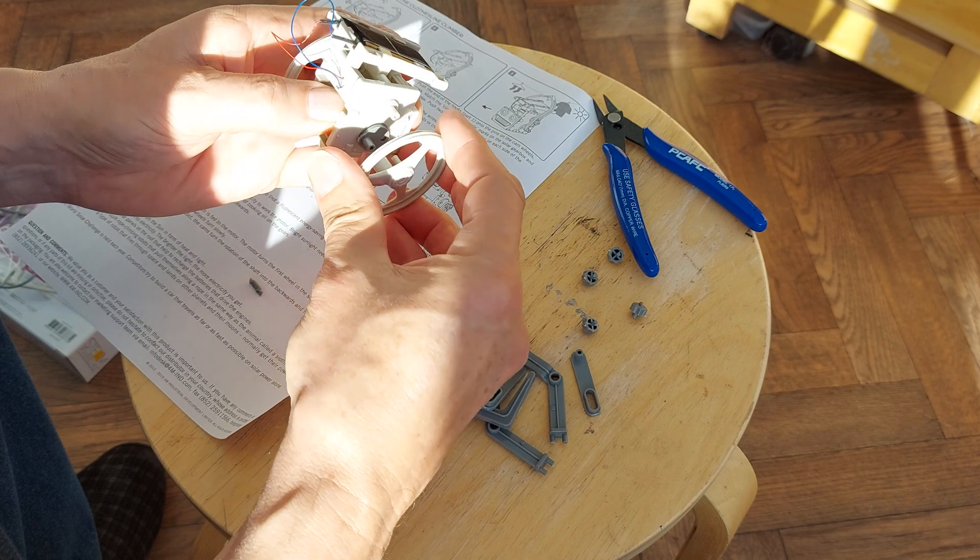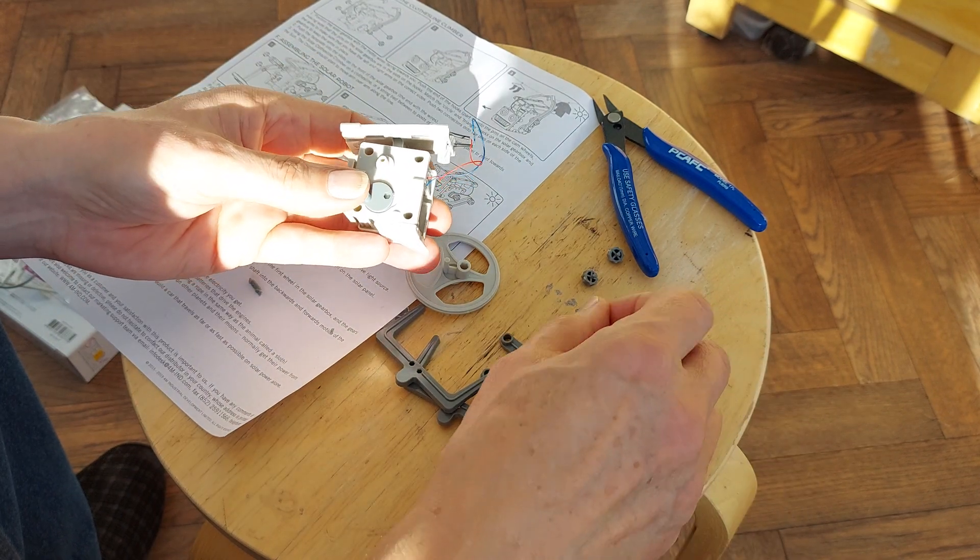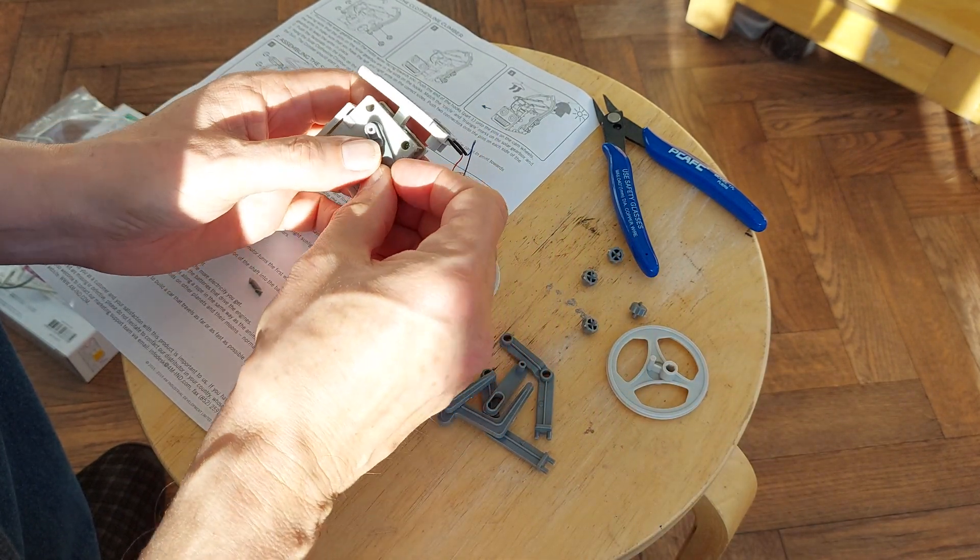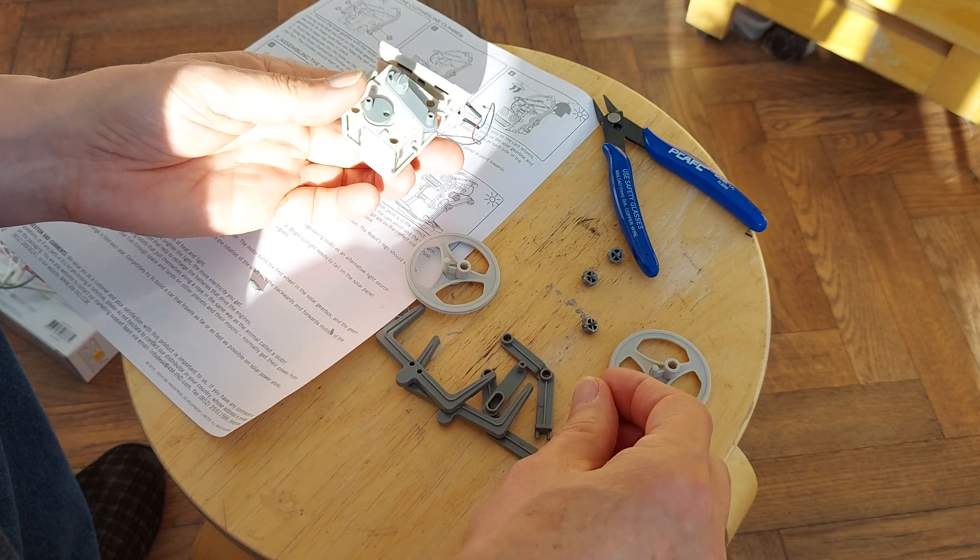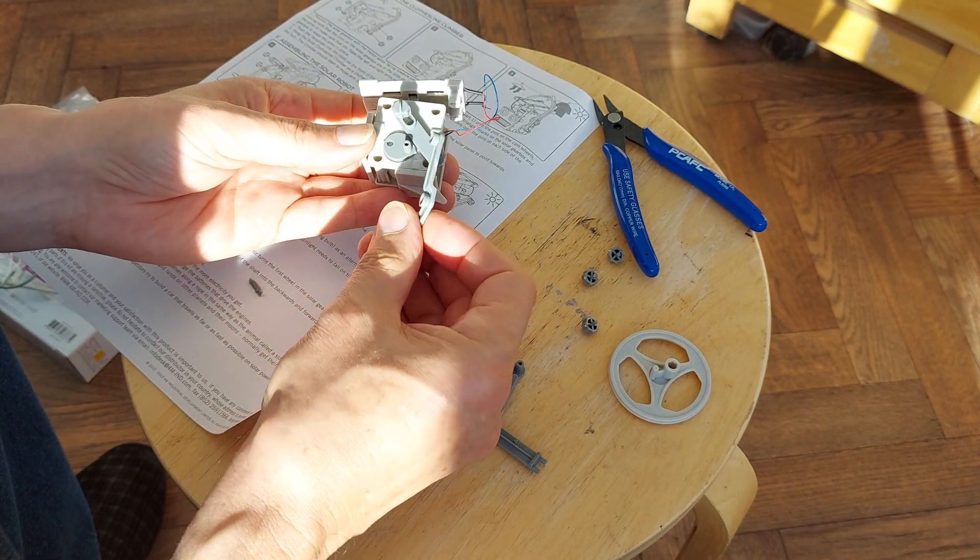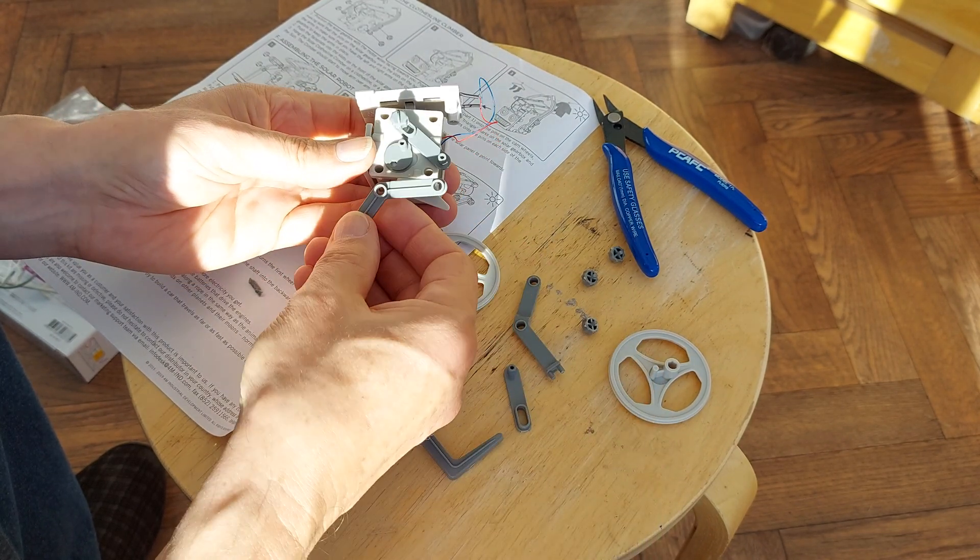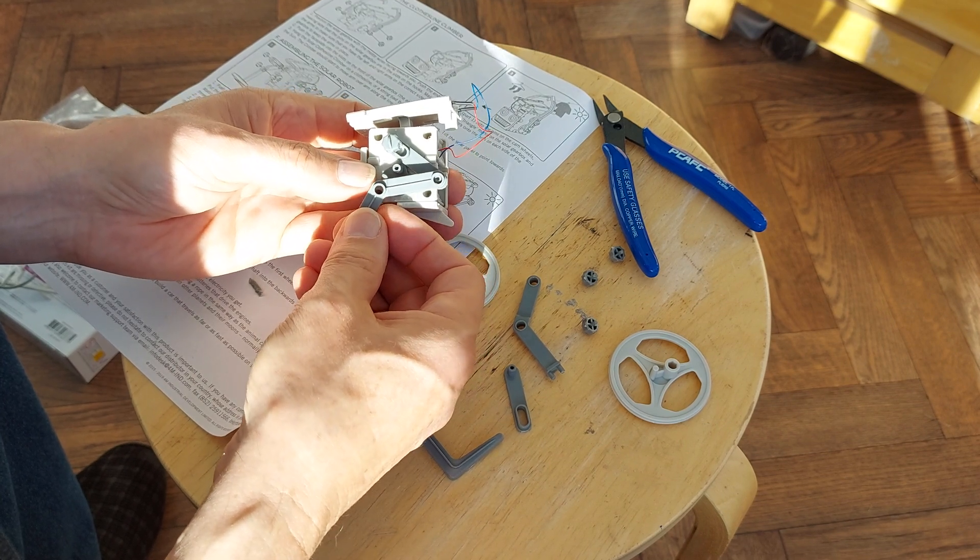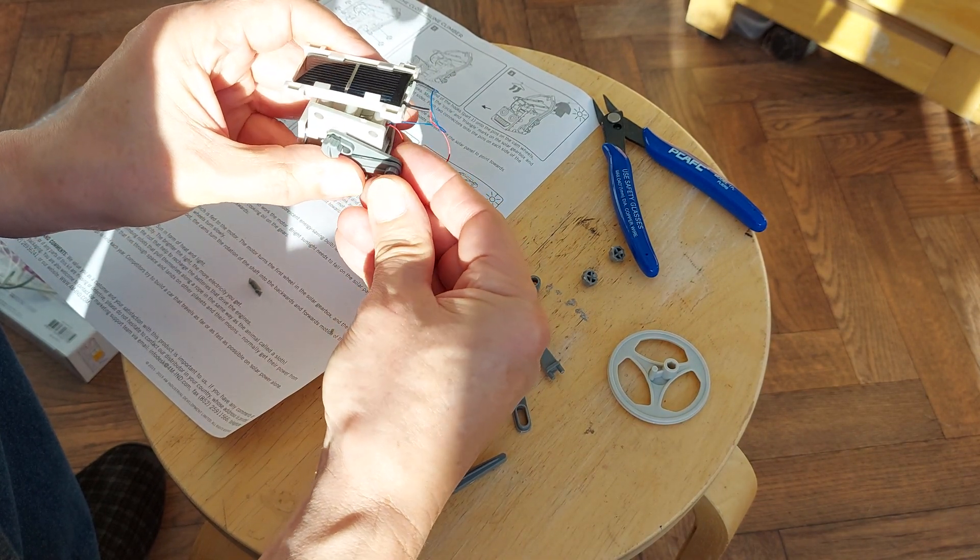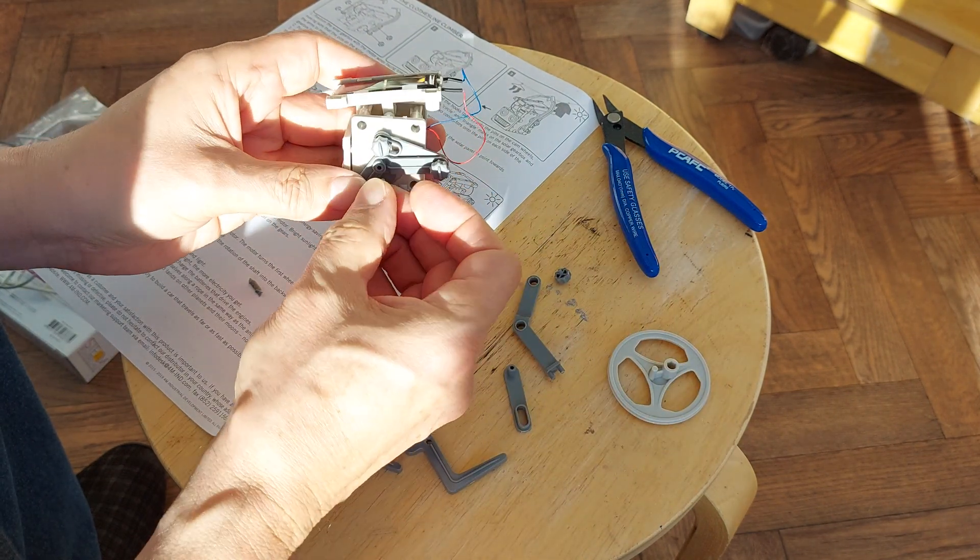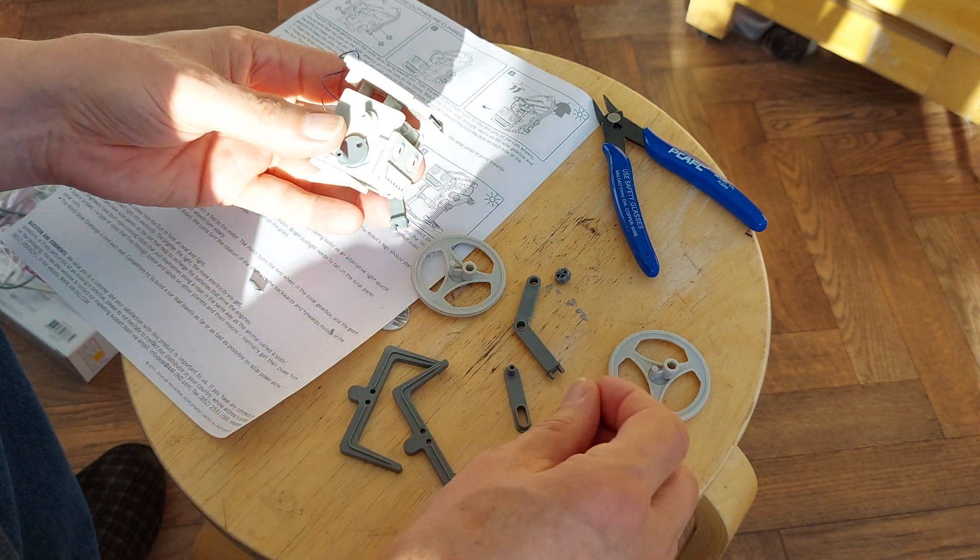Alright, the wheel's going to have to come off again. That one goes over there with one of them on there. That's going to go that way around. Onto there and onto there. A few more of these I'm going to need. There we go.